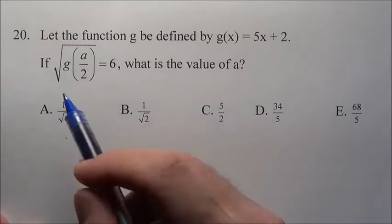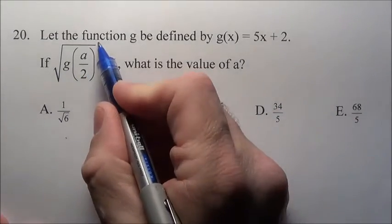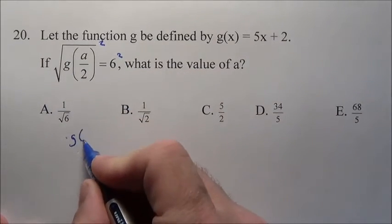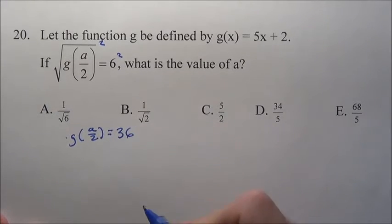Now the first thing I'm thinking is, the square root of all this is equal to 6. What if I just square both sides? That will take care of giving me just g(a/2) equals 36.